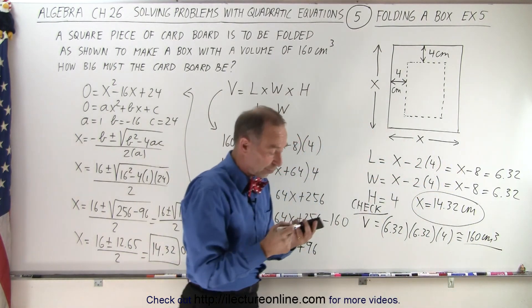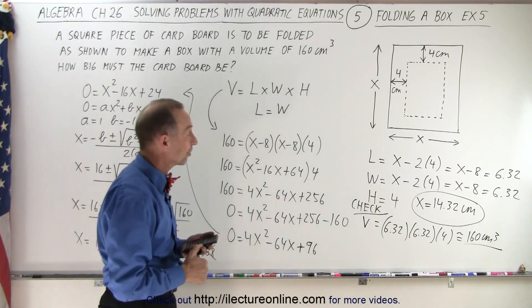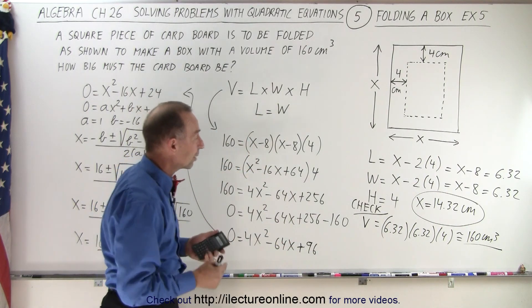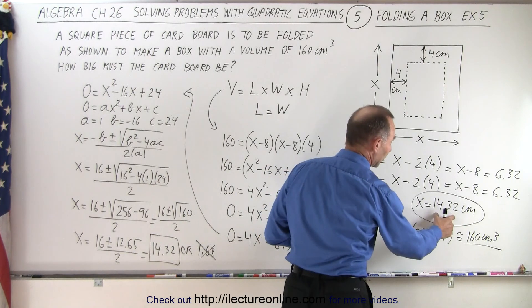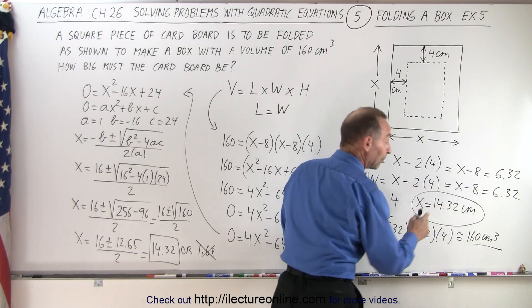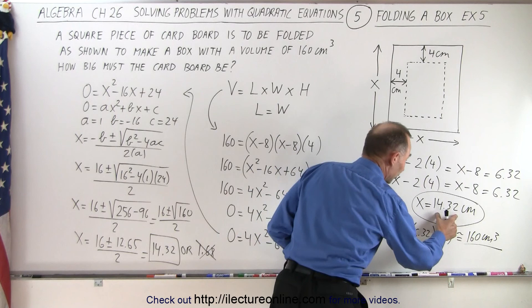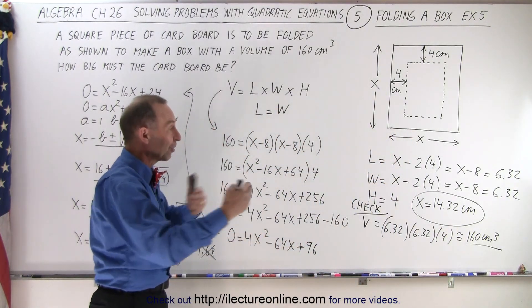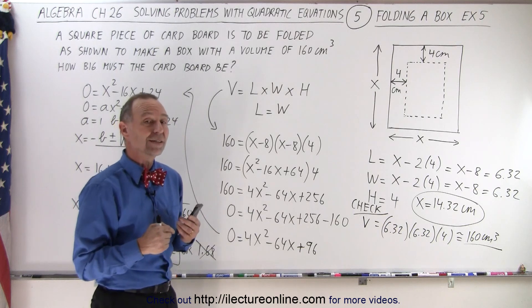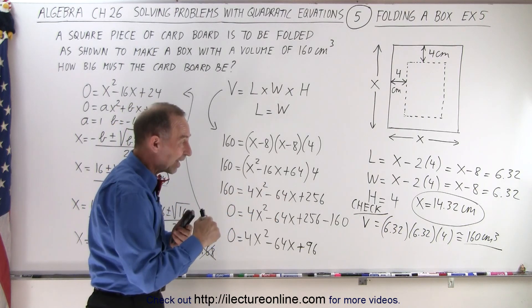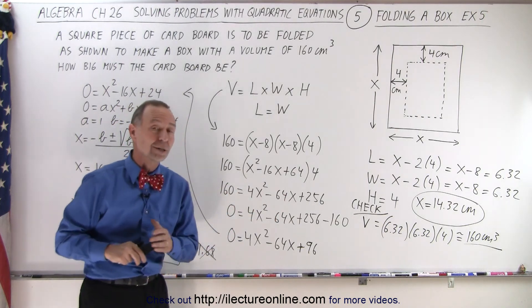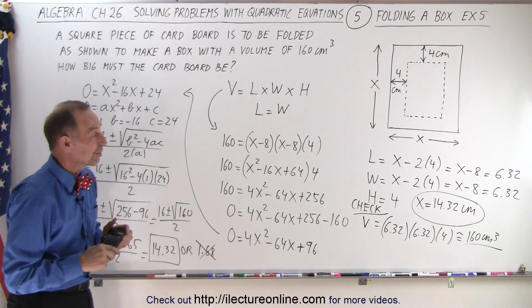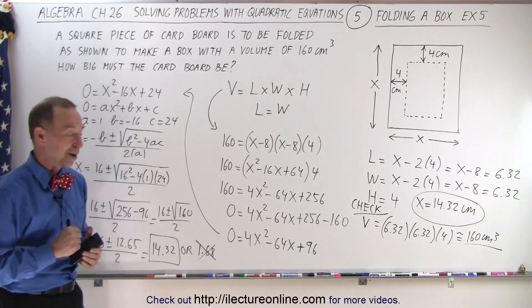And therefore we got the right answer. So that means we're going to start out with a box that's 14.32 centimeters by 14, not a box, but a cardboard sheet that's 14.32 centimeters by 14.32 centimeters. We're going to fold up 4 centimeters on both sides, on the width and the length on both sides, and we end up with a box with a volume of 160 cubic centimeters, and that is how it's done.